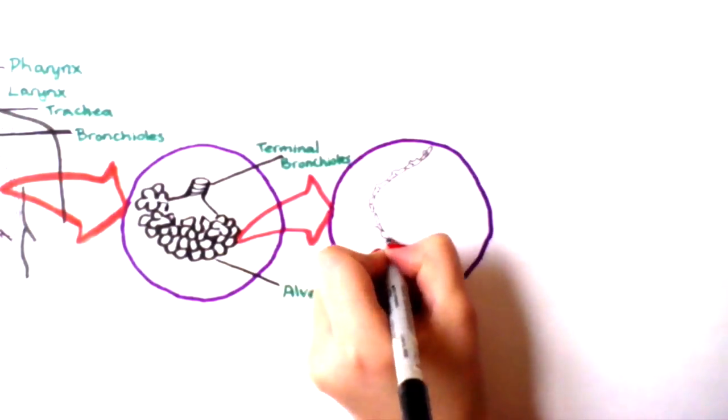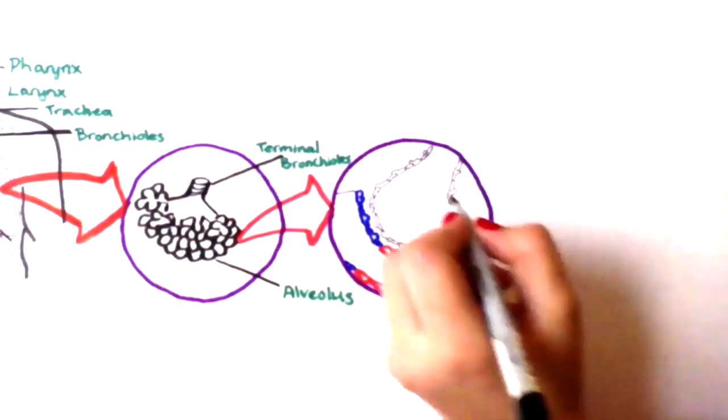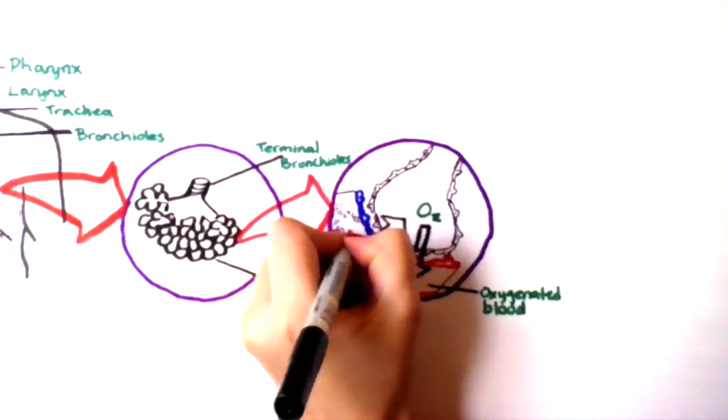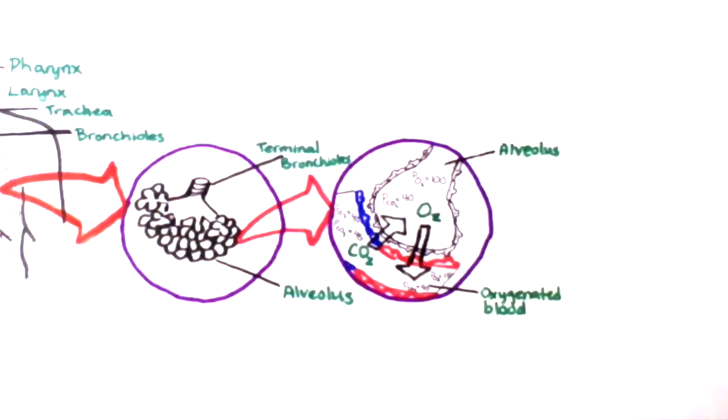The exchange of gases between the alveoli and the blood occurs by simple diffusion. Oxygen diffuses from the alveoli into the blood down its pressure gradient from 100 mmHg down to 40 mmHg in the blood. Carbon dioxide diffuses from the blood into the alveoli down its pressure gradient from 45 mmHg to 40 mmHg.